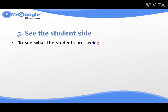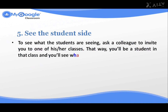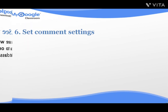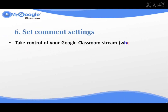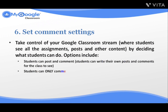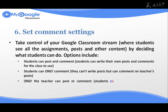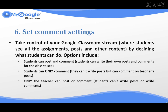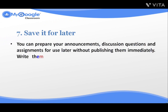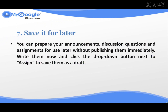Number five: See the student side. To see what the students are seeing, ask a colleague to invite you to one of their classes — that way, you'll be a student in that class and see what Classroom looks like from the student perspective. Number six: Set Comment Settings. Take control of your Google Classroom stream — where students see all the assignments, posts, and other content — by deciding what students can do. Options include: Students can post and comment; students can only comment but can't write posts; or only the teacher can post or comment. Number seven: Save it for Later. You can prepare your announcements, discussion questions, and assignments for use later, without publishing them immediately. Write them now and click the drop-down button next to Assign to save them as a draft.